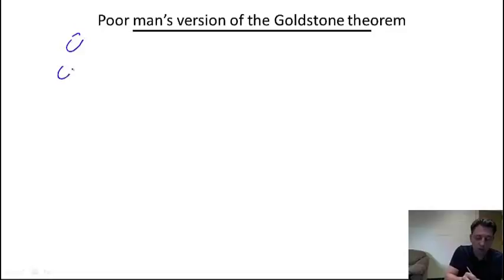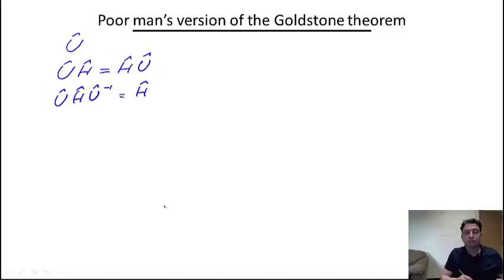What it means is that there exist transformations, let me call them U, and this operator commutes with the Hamiltonian which describes this system. So this is what it means. Or in other words, U H U⁻¹ is equal to H itself.